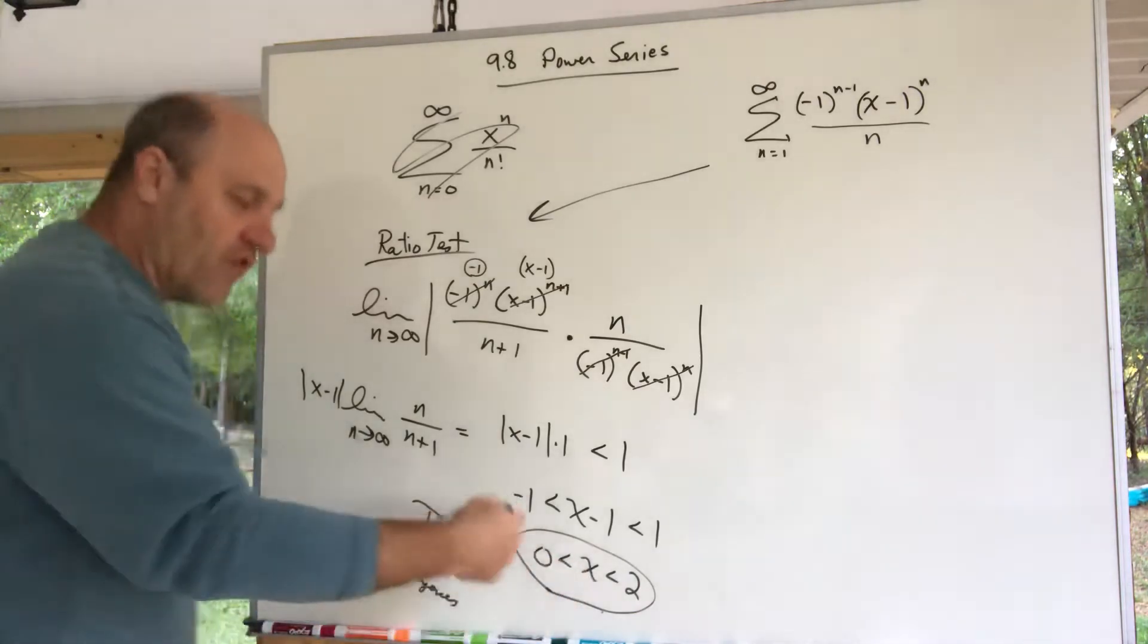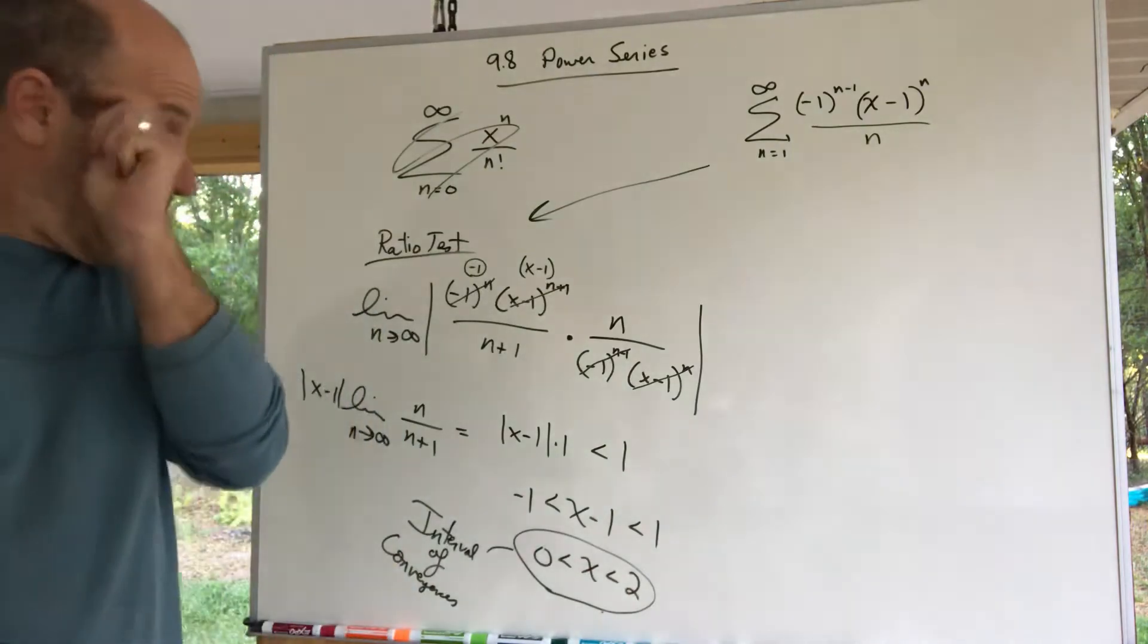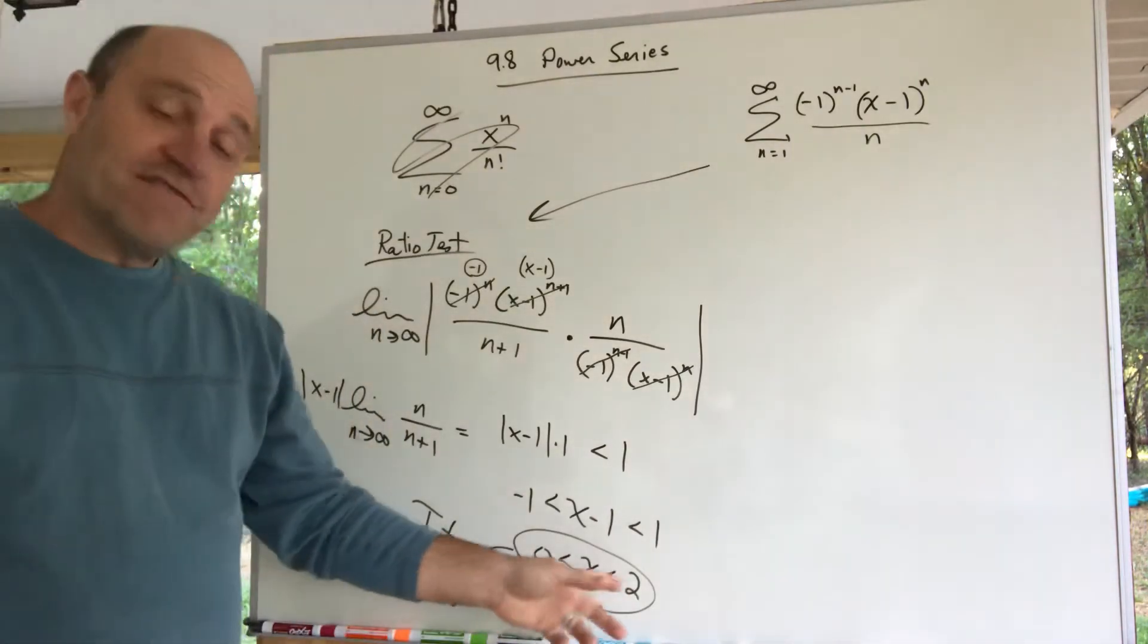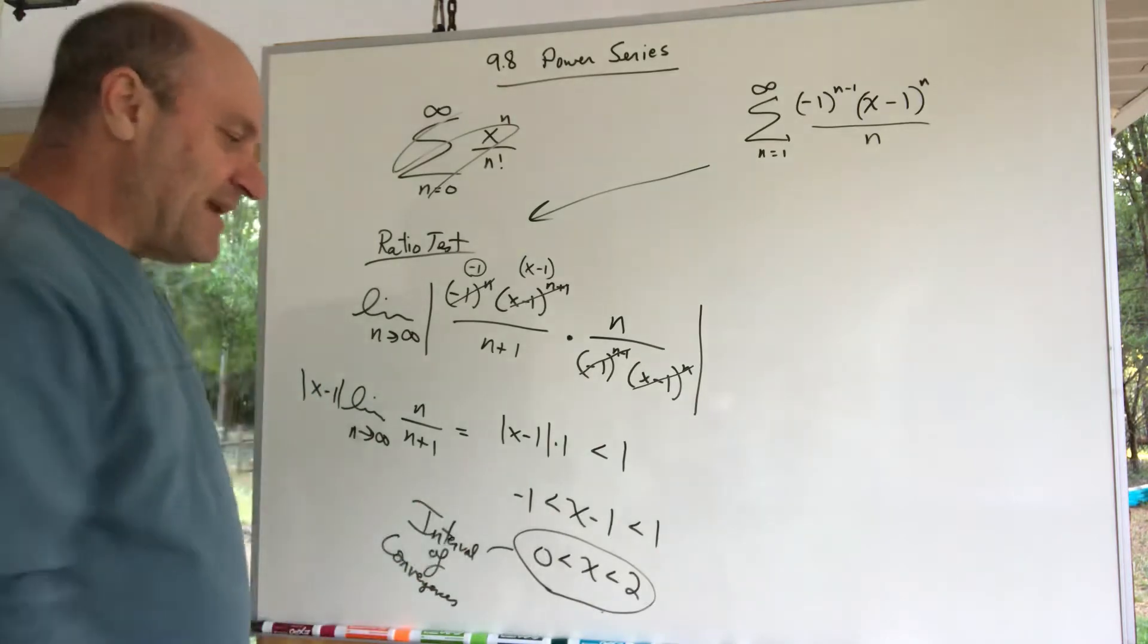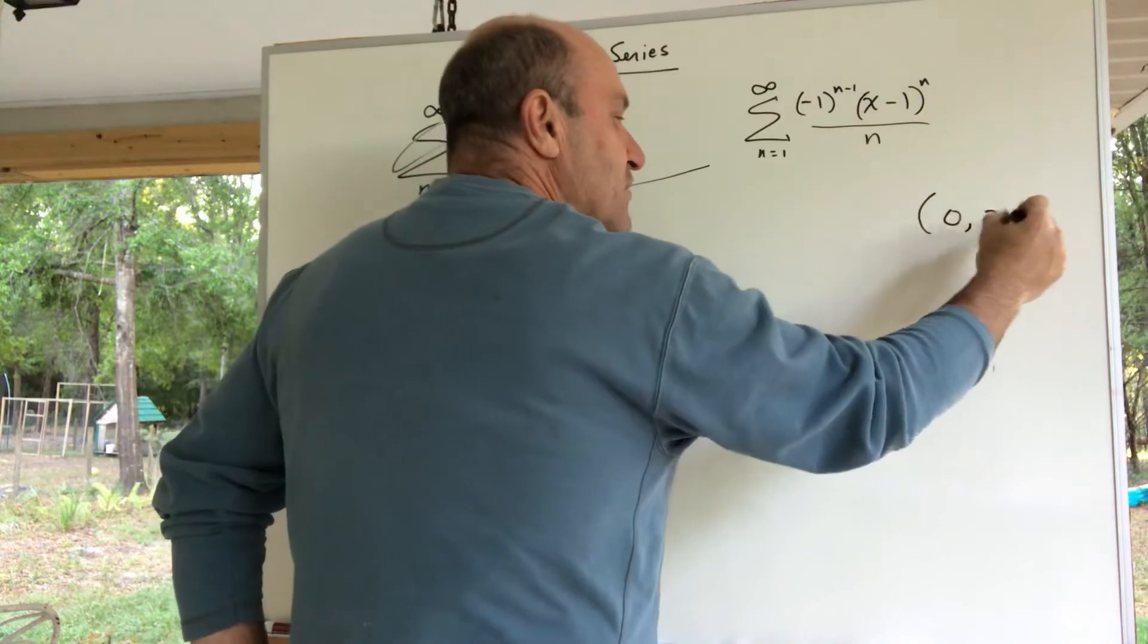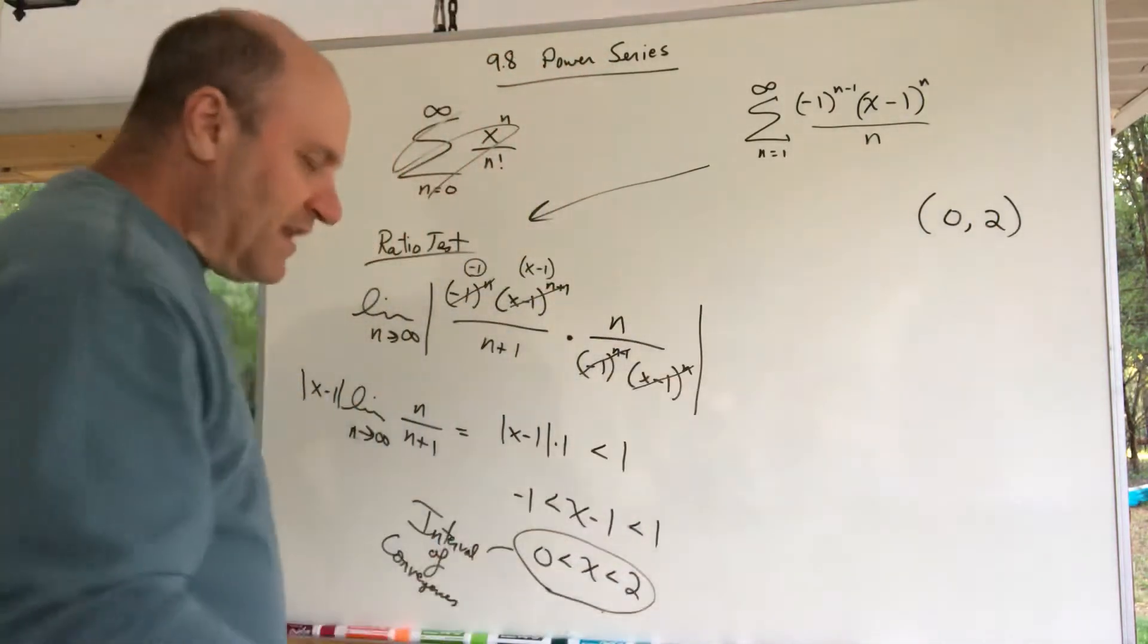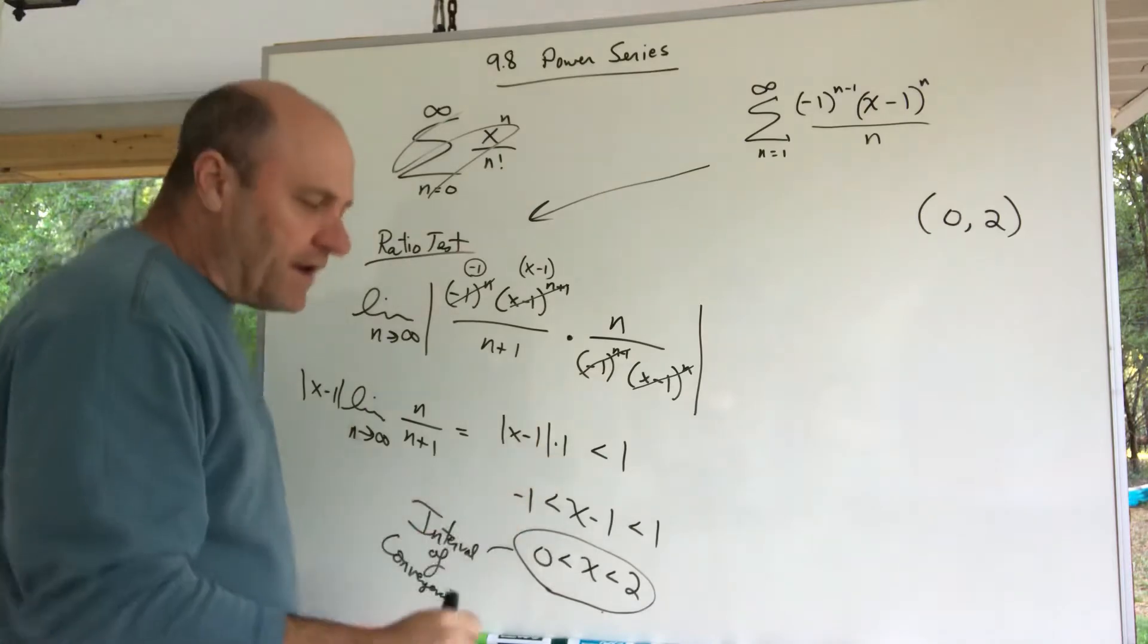It's an interval for those x's—this series converges for any x inside of that. It doesn't converge outside. Now there's a little technicality. So far, what I have for the interval of convergence is 0 to 2, but we're really not sure. If you remember the ratio test, this is a little sticky point here—we're supposed to check these endpoints.